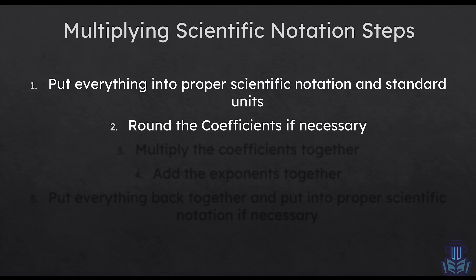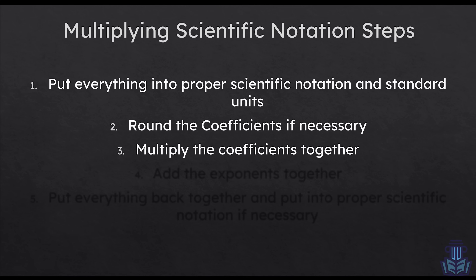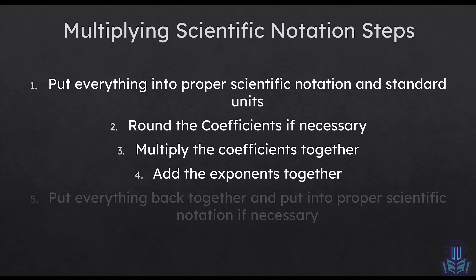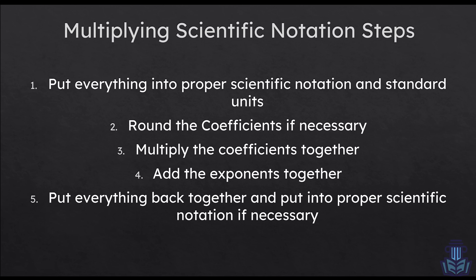Then you're going to split the coefficient away from the exponent portion of the scientific notation, and simply multiply the coefficients together. With the exponents, all you have to do is add them together since we're multiplying. Finally, put everything back together and make sure it's in proper scientific notation and in the right format that the answer choices are listed in. I know this sounds like a lot, but with the example it's going to be really easy to see what I'm getting at.